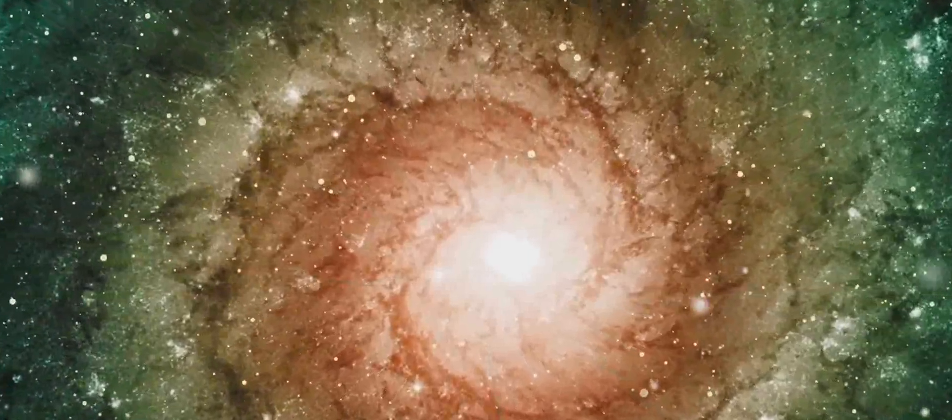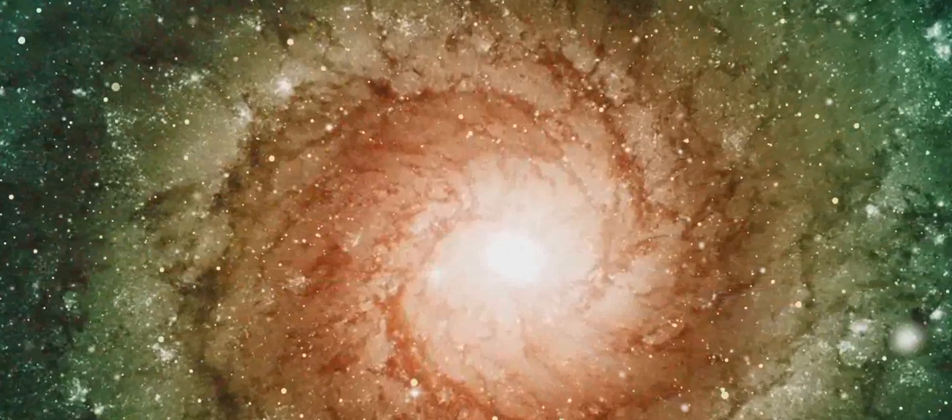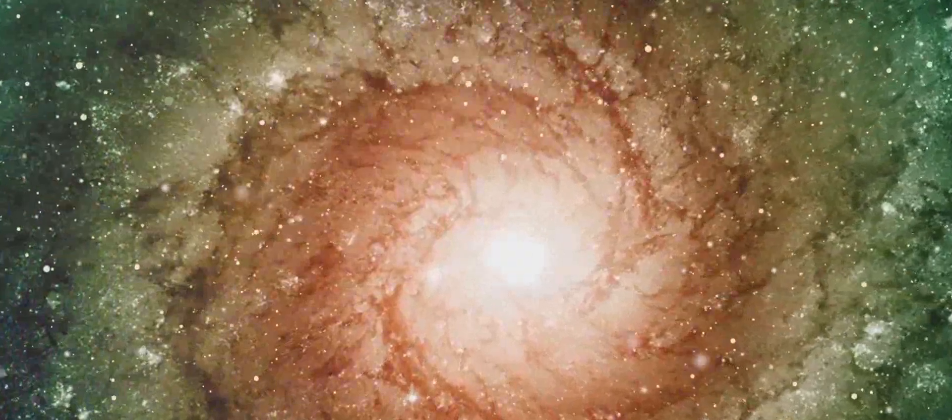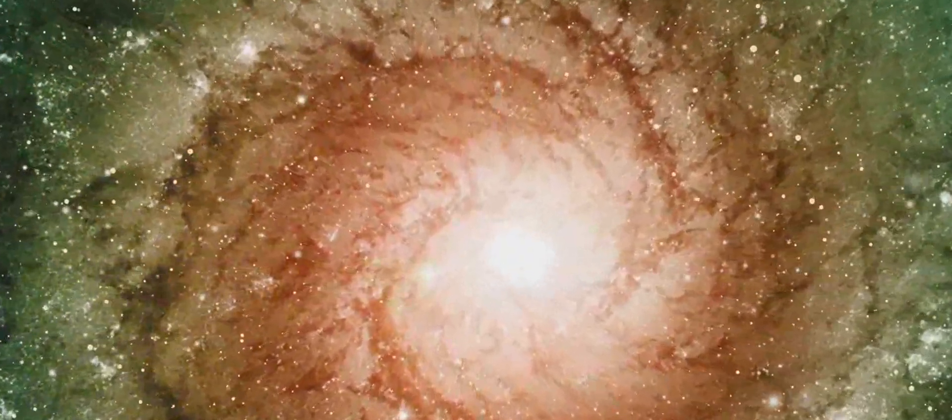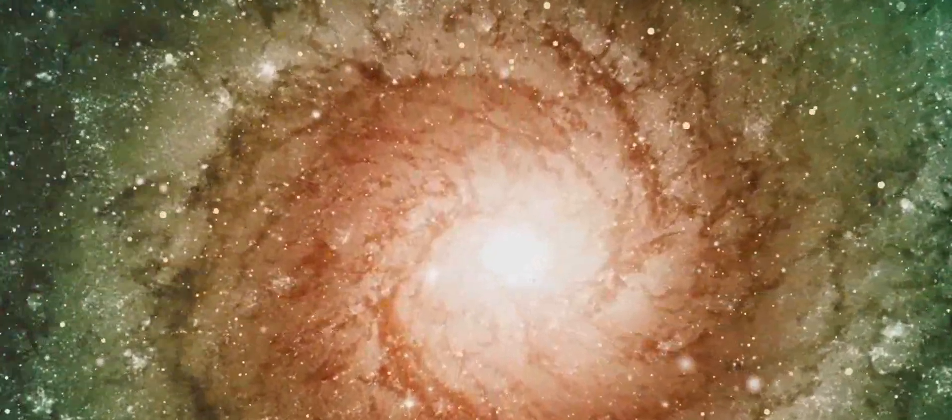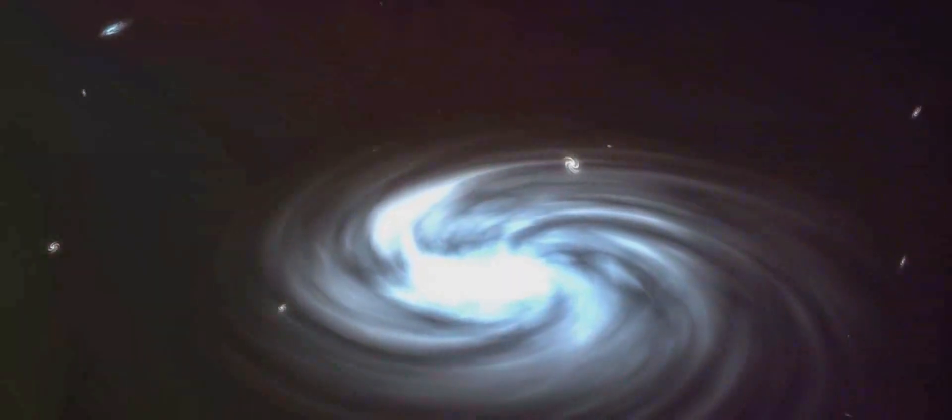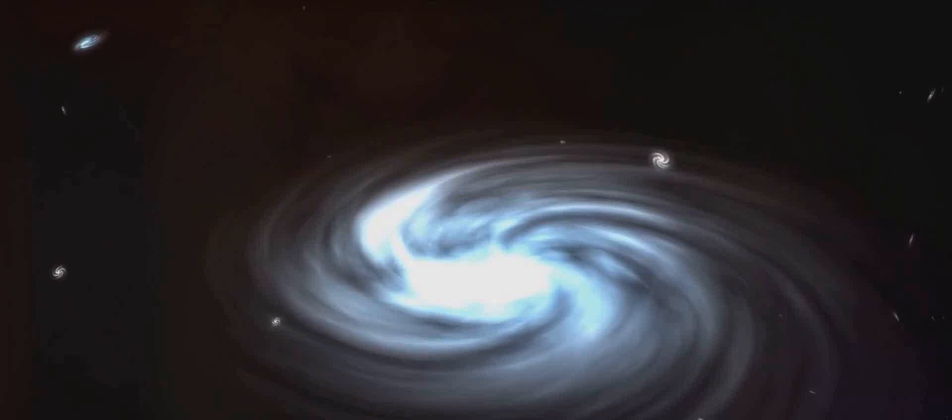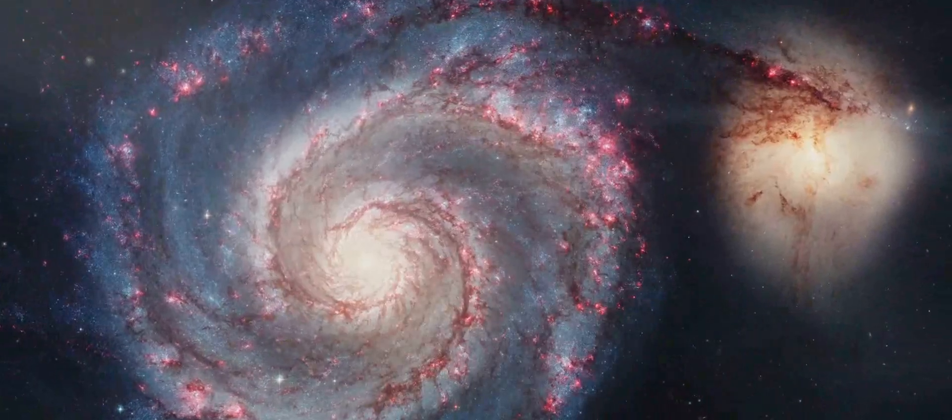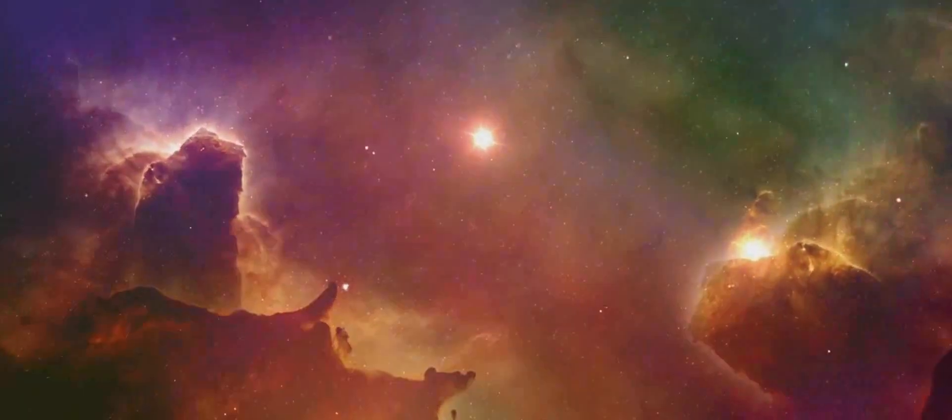These early galaxies were the building blocks of the cosmos. They were the seeds from which the universe's grand design sprouted. From these humble beginnings, the universe grew, evolved, and transformed into the wondrous expanse we see today. But how did we get from a universe with just 717 galaxies to one teeming with billions? The answer lies in the process of galactic growth and evolution.